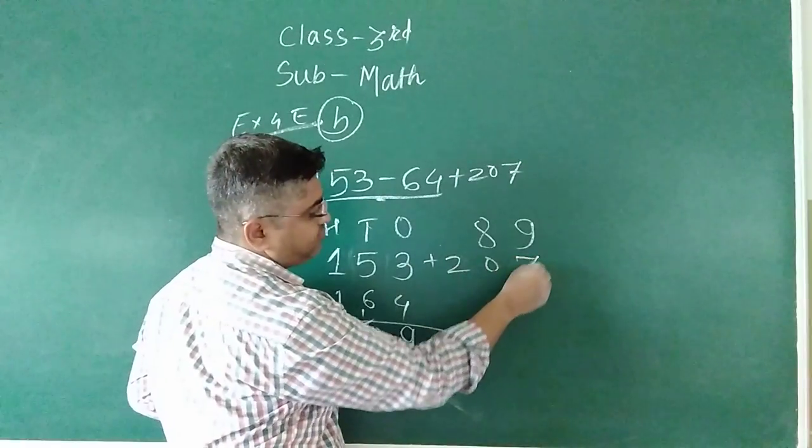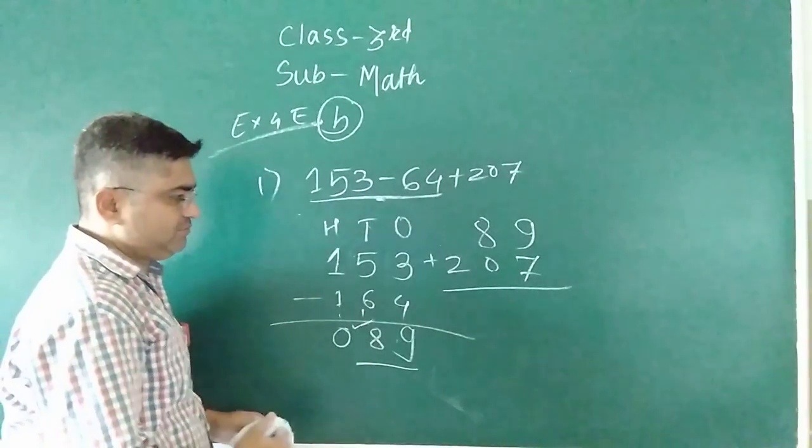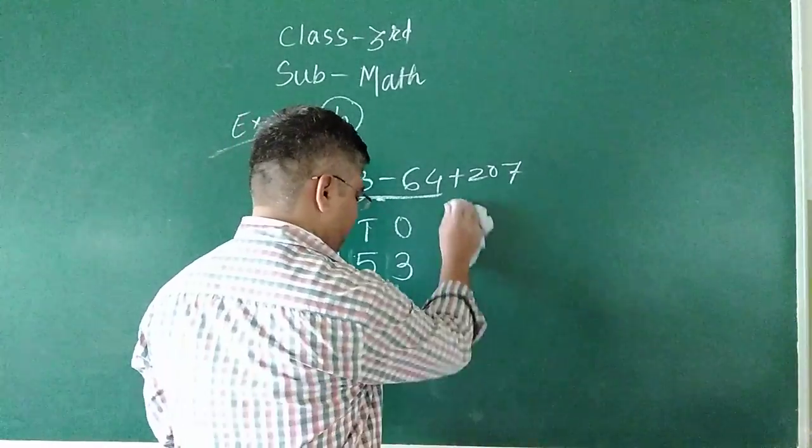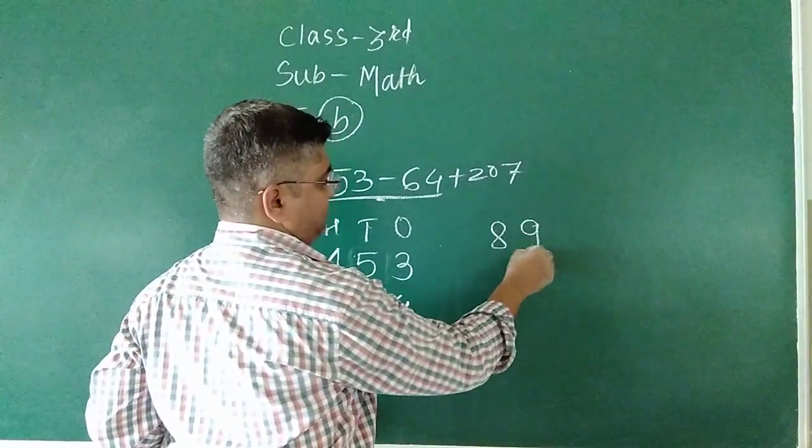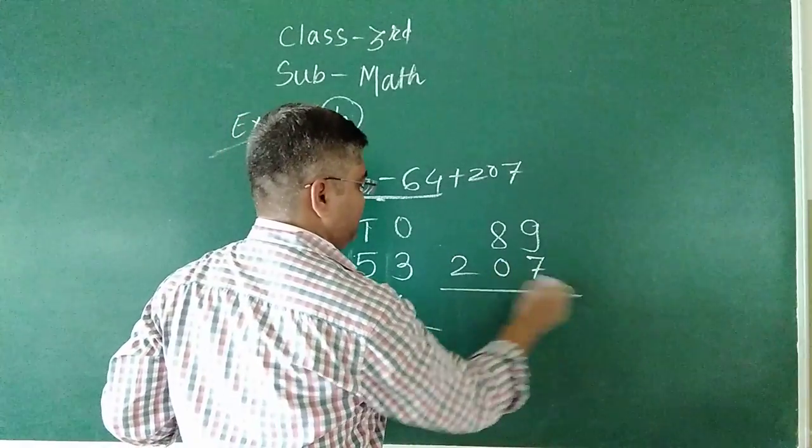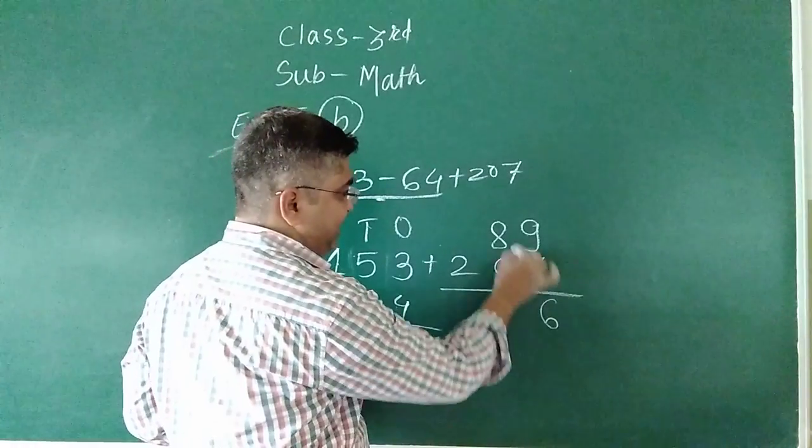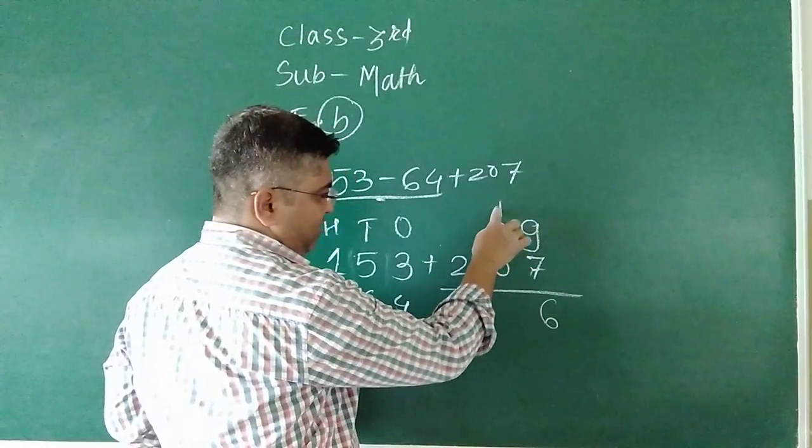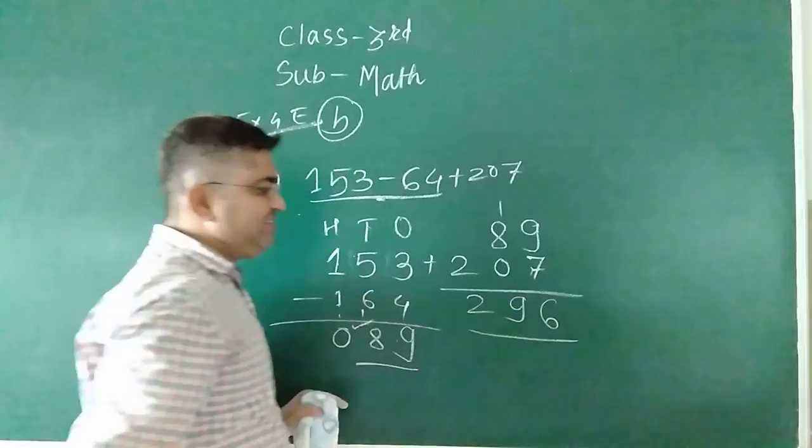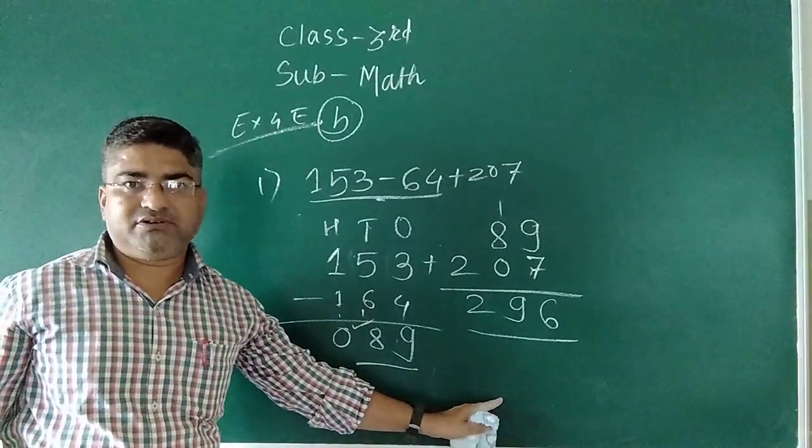Now 89 plus 207. 9 plus 7 is 16, write 6 carry 1. 1 plus 8 is 9, plus 0 is 9. 2. How much answer? 296. So this is our answer.